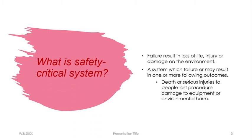What is a Safety Critical System? A Safety Critical System is one whose failure results in loss of life, injury, or damage to the environment. It is a system whose failure may result in one or more of the following outcomes: death or serious injuries to people, loss of property, damage to equipment, or environmental harm. Examples include bone fractures, traffic collisions due to stoplight malfunctions, resource crises, pollution, and hardware or software failures.